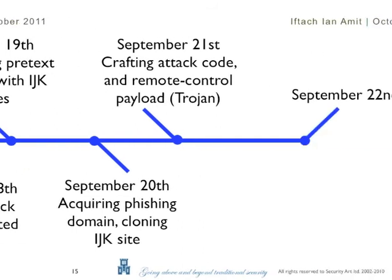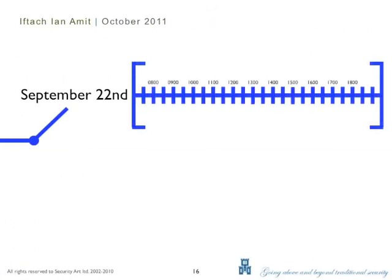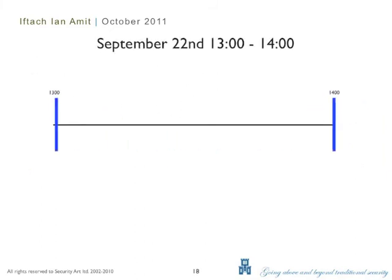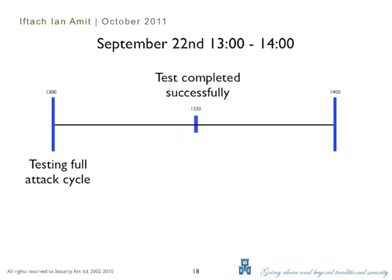On the day of the attack itself, the phishing domain and website were brought online early in the morning, and the spear phishing email was crafted a few hours before the planned launch time. At 1300 hours, a test for the full cycle of the attack started to make sure no loose ends were left. The test was announced successful at 1330, and the actual attack email was sent at 1349 to the list of individual targets.